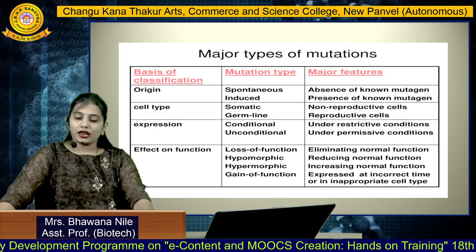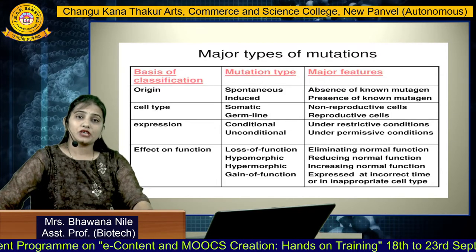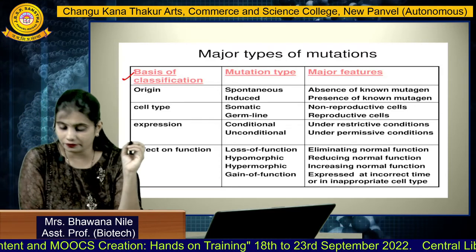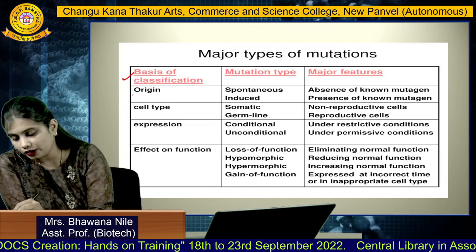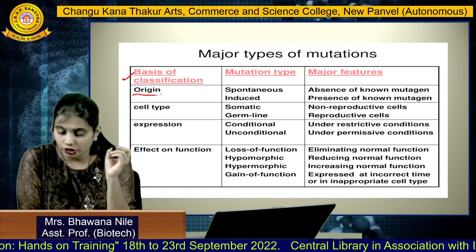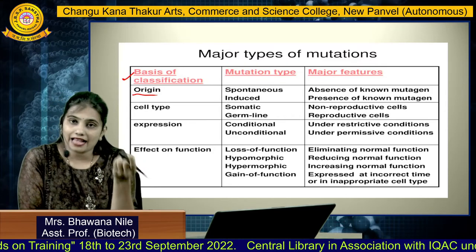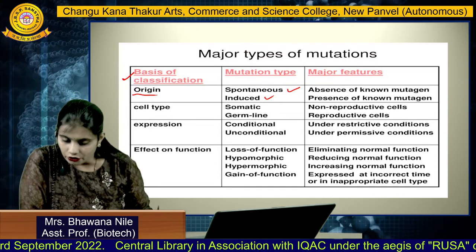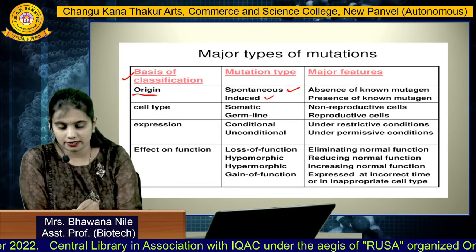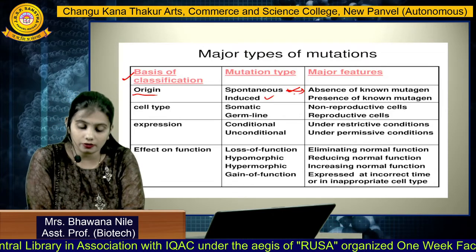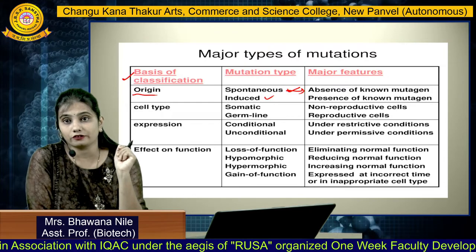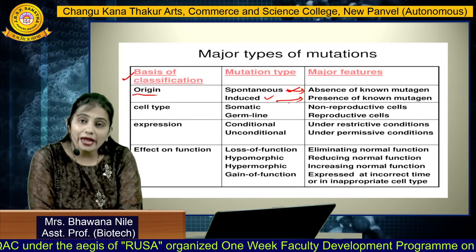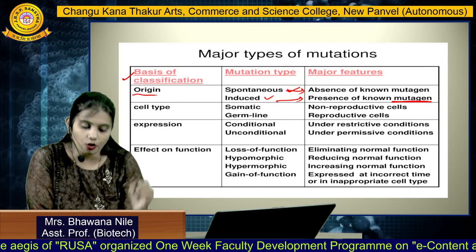Lastly, the major types of mutations can be classified on several bases. First, on the basis of origin, mutations are categorized into two groups: spontaneous and induced. The major feature of spontaneous mutation is that it can occur in the absence of any known mutagen, whereas induced mutation always occurs in the presence of a mutagen.